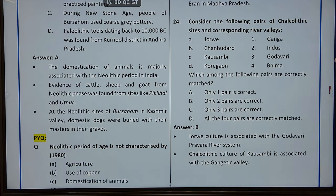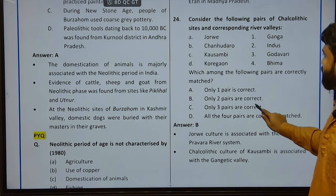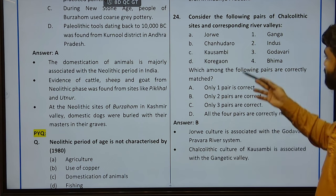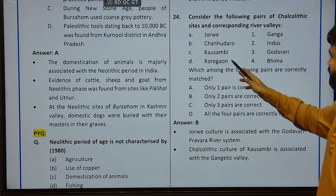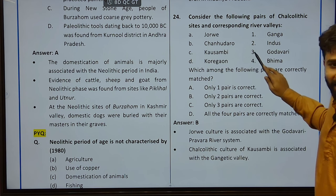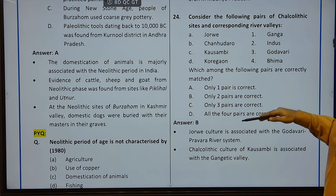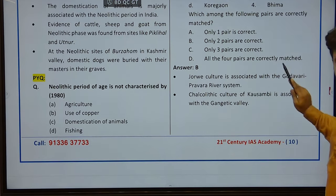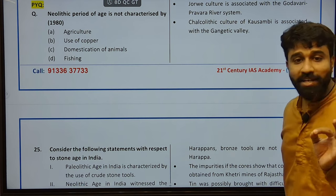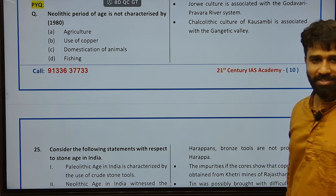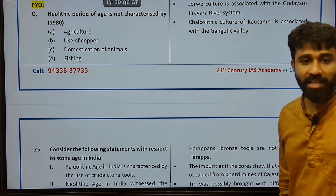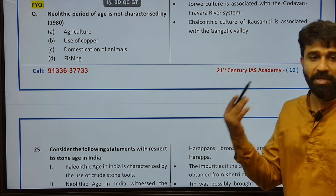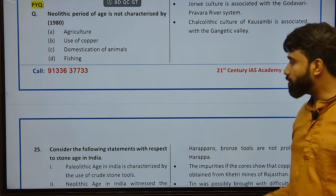Consider the following phases of Chalcolithic sites and corresponding river valleys. Jorwe — Godavari, Ganga? No — Pravara, one of the tributaries. Next, Chandugaon — Indus; Kaushambi — actually Ganga. Only two pairs are correctly matched. Every question contains four sub-questions — each pair is a question itself. If you know one pair is incorrect, you can eliminate options. But you need to know every pair.